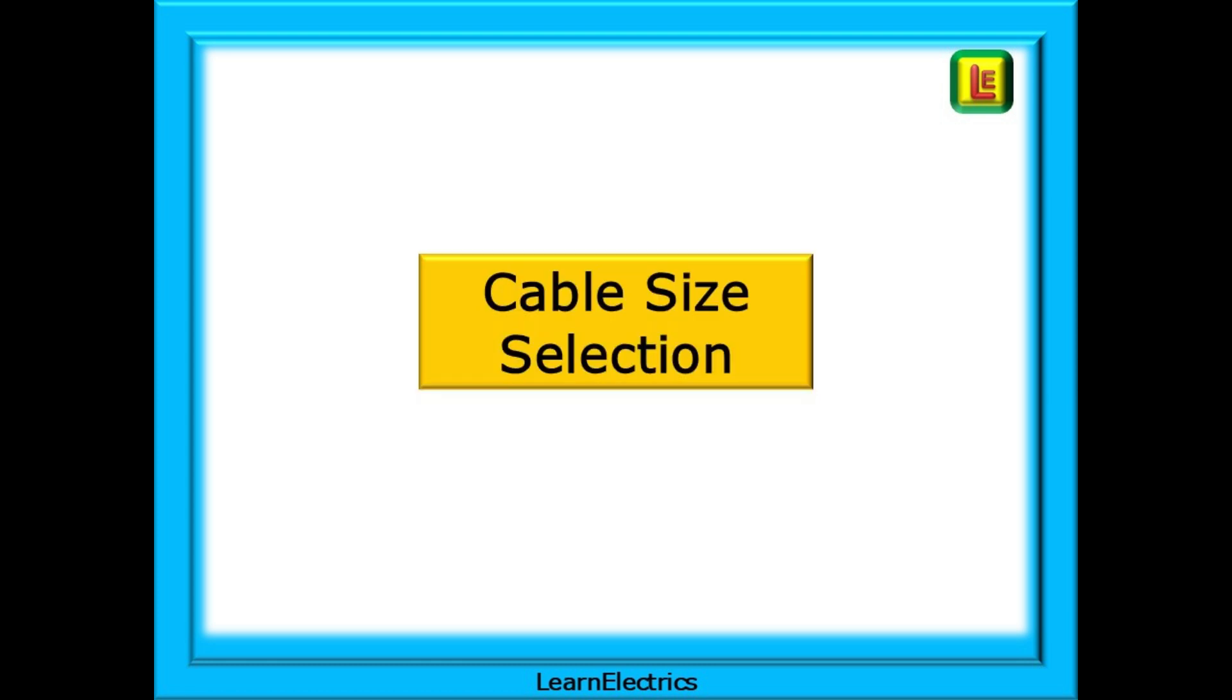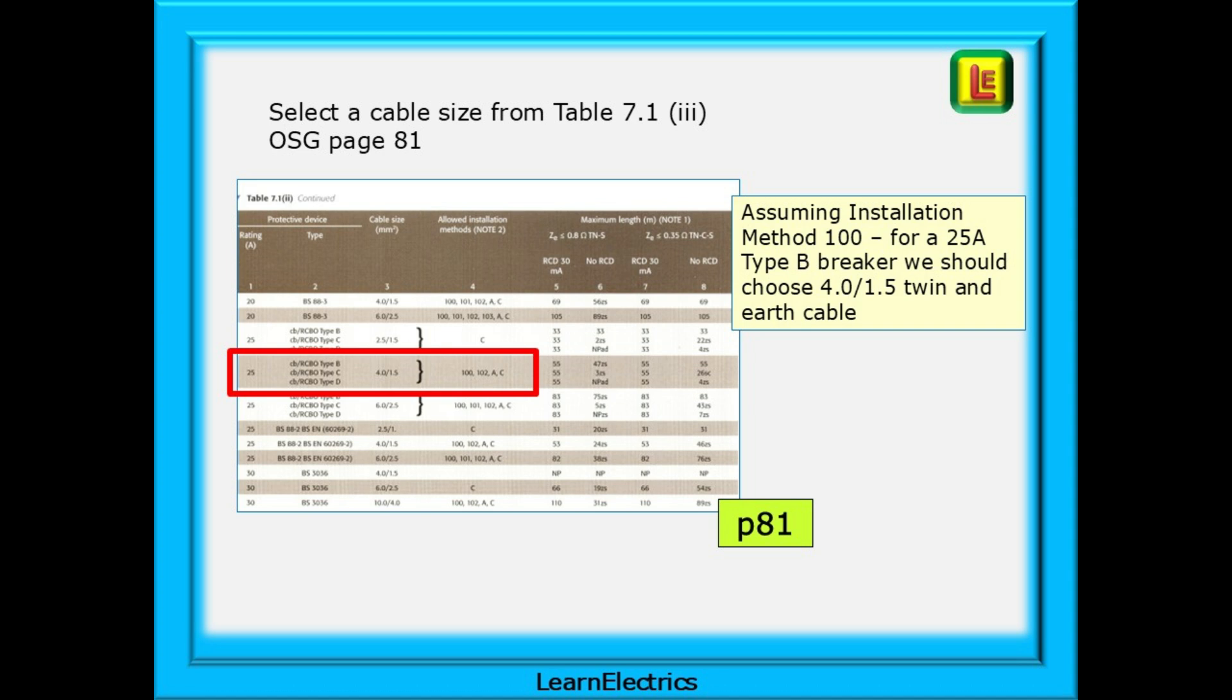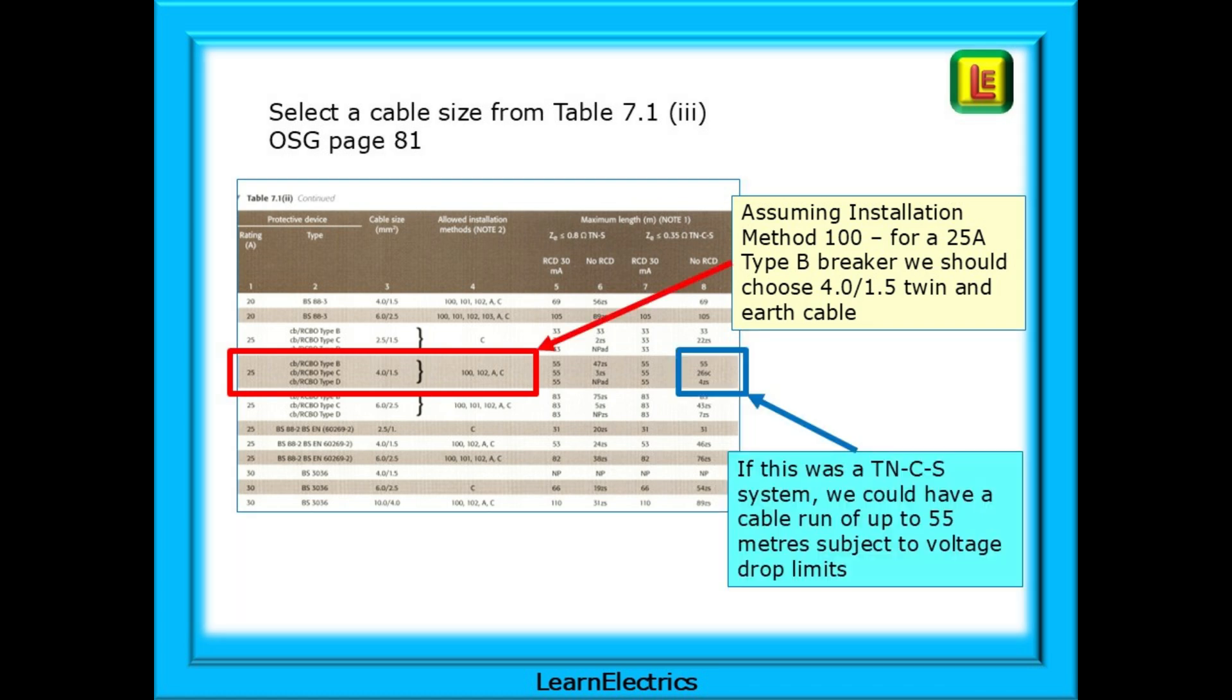Now that we've selected a breaker, we can move on to cable size selection. Table 7.1.3 in the on-site guide covers several pages. Take some time to study the layout and order of these pages. We want page 81. We will make some assumptions and assume that the installation method 100 applies. And the table shows us that, for a 25 amp type B breaker, we should choose 4mm by 1.5mm twin and earth cable, as shown in the red box. The table also tells us that, if this was a TNCS system, then we could have a cable run of up to 55 metres subject to voltage drop limits. And we should check this next.